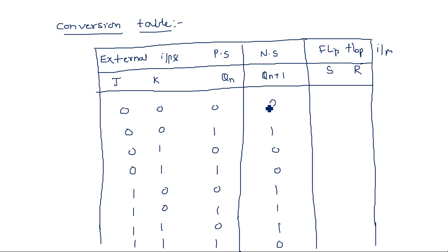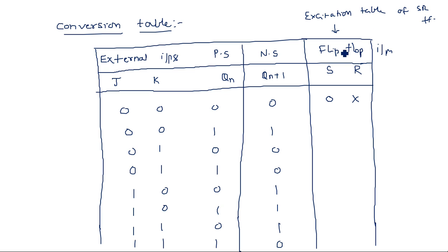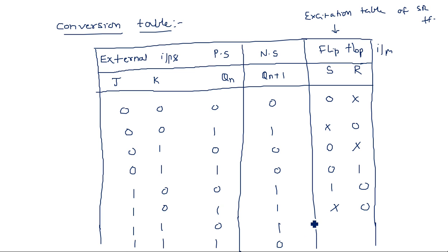From the SR flip-flop excitation table: when present state is 0 and next state is 0, S=0 and R=don't care (0X). When present state is 1 and next state is 1, S=don't care and R=0 (X0). When present state is 0 and next state is 1, S=1 and R=0. When present state is 1 and next state is 0, S=0 and R=1. This excitation table was explained in the previous video.